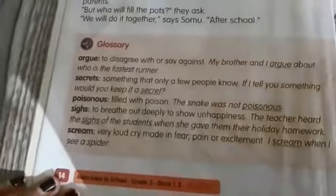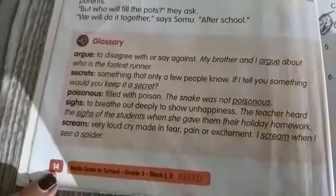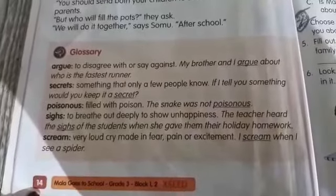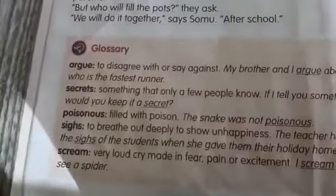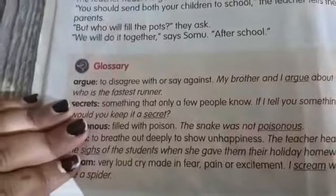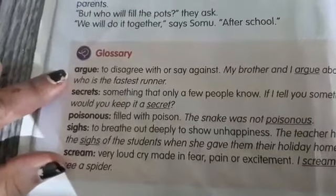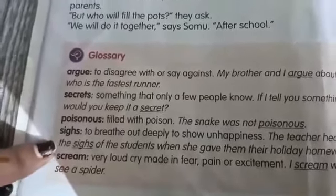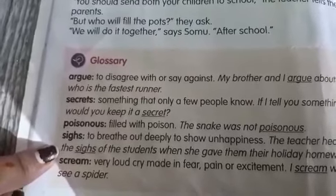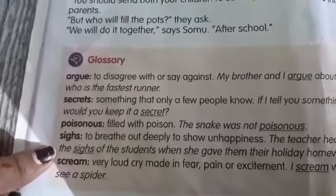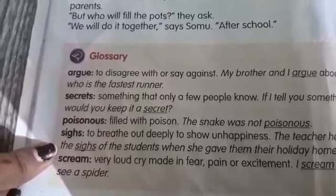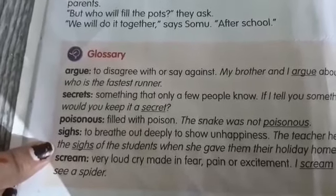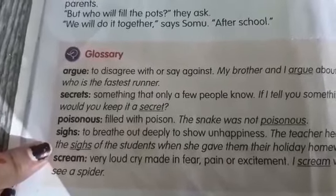Next, turn to page number 14. On page number 14, you can see glossaries. How many glossaries are there? One, two, three, four, five glossaries are there. The glossaries are: argue, secrets, poisonous, sigh, scream.